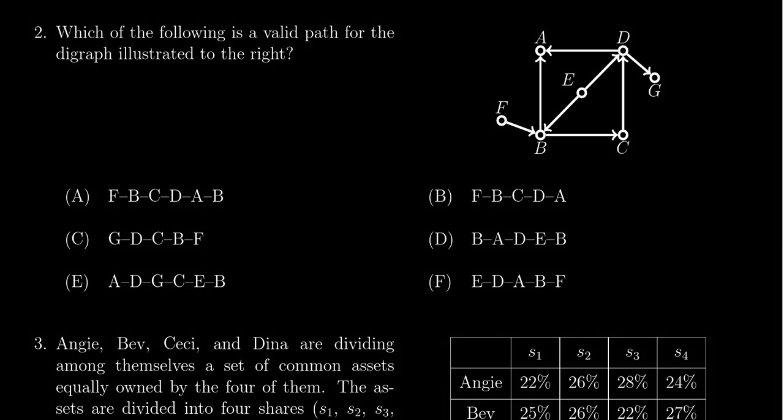In this video, we provide the solution to question number two for practice exam number two for math 1030, in which a diagraph is provided to us, and we have to determine which of the following sequence of vertices is a valid path on this graph.